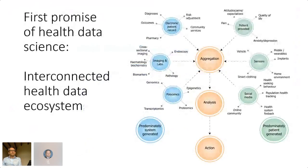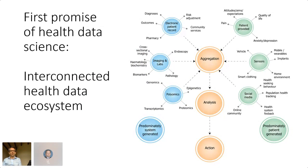The first promise of health data science is an interconnected health data ecosystem where information from electronic patient records, imaging, labs, and omics is aggregated together with data from patients directly — maybe from sensors or social media — then analyzed and turned into actionable output clinicians can use to improve patient care. Some of these connections exist in some places, but we're really quite far from this reality in most health systems.